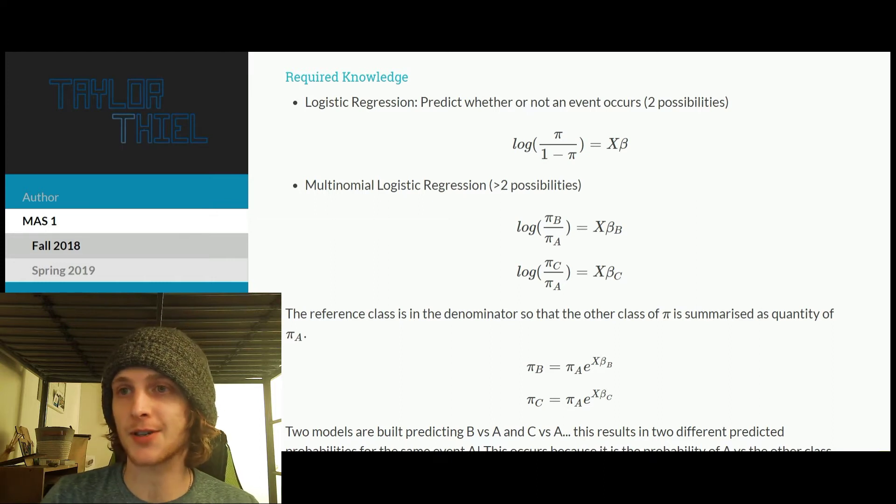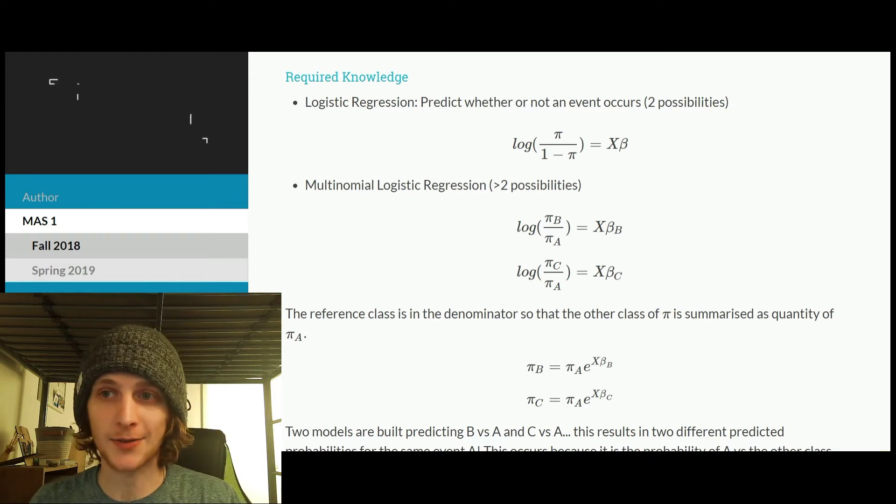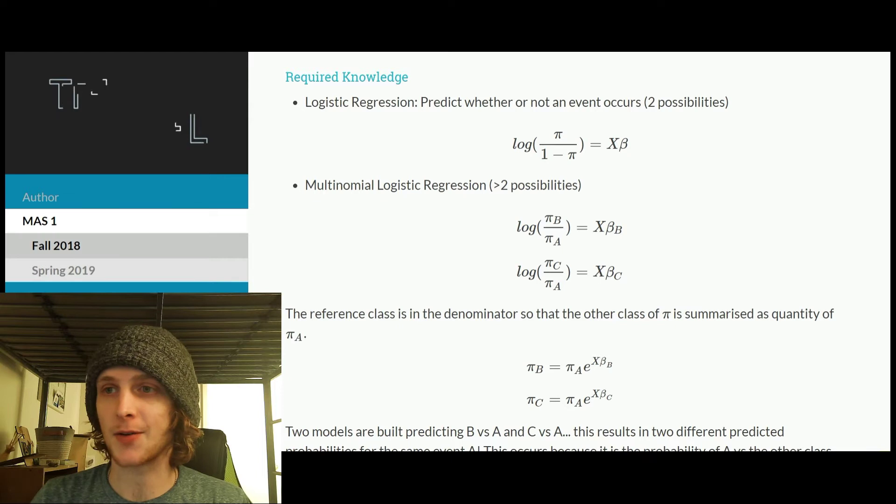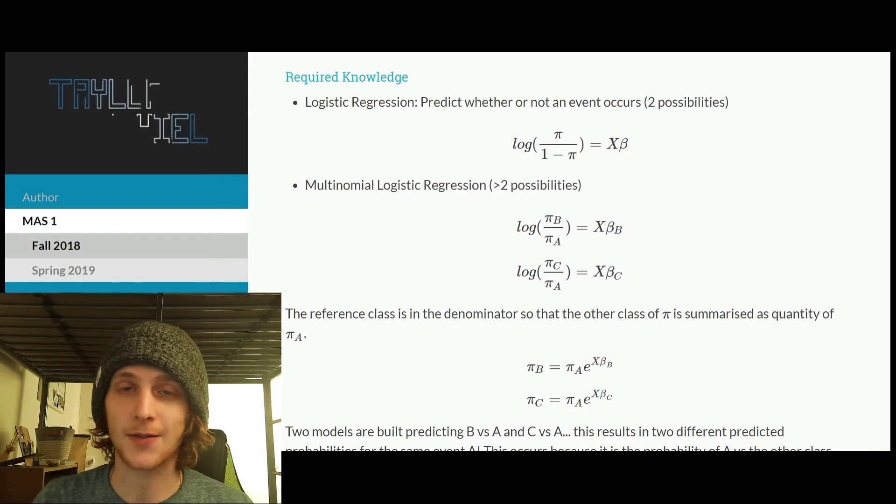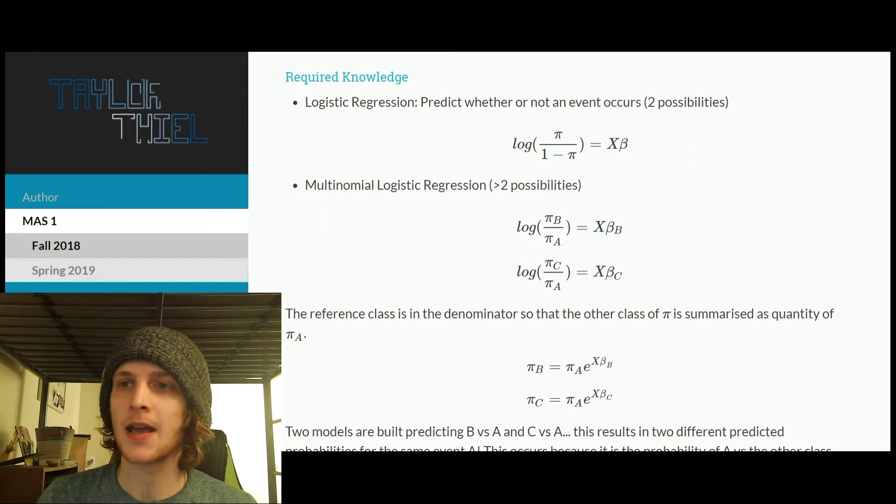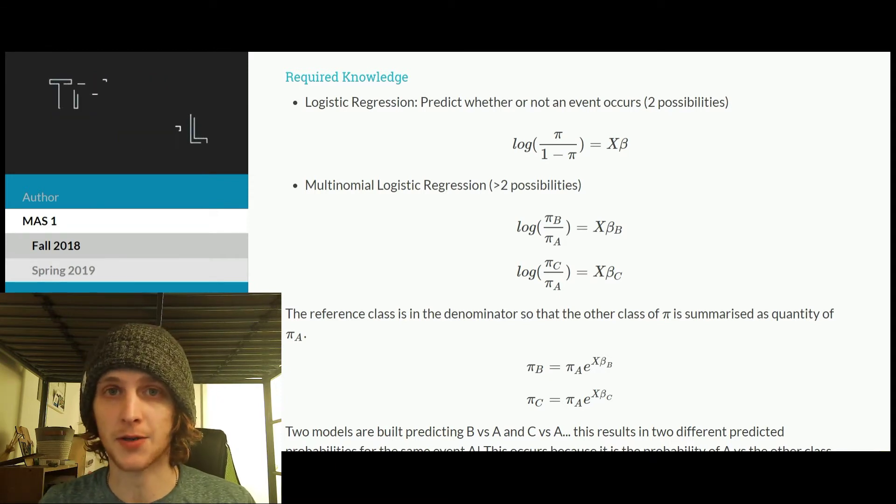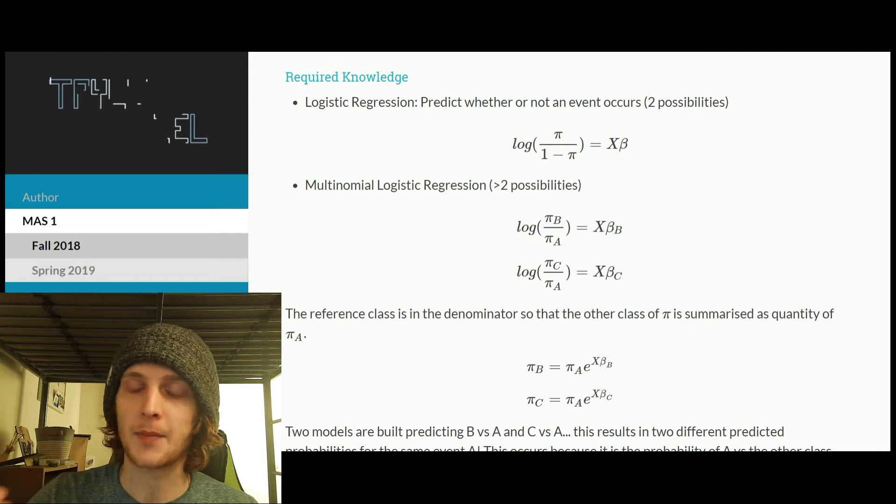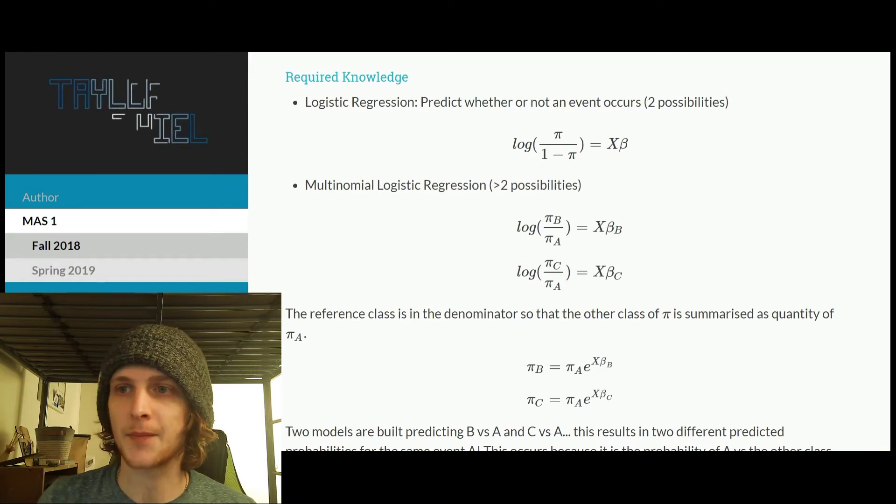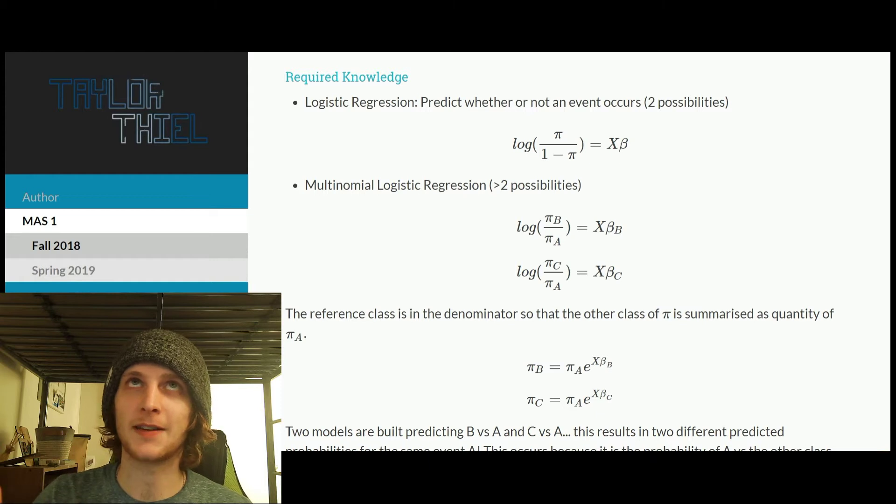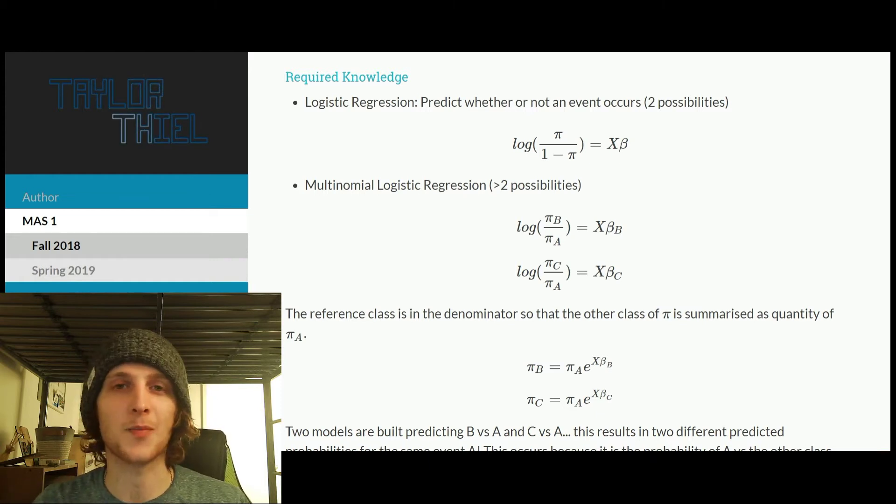So multinomial regression is just when you up the ante to more than two events. So you have event A, B, and C, so there's three possible outcomes. And the way you can model this is essentially by just having two separate models, where we're just building a logistic regression. So before we had pi divided by 1 minus pi, but that's the same as just labeling not pi as event B.